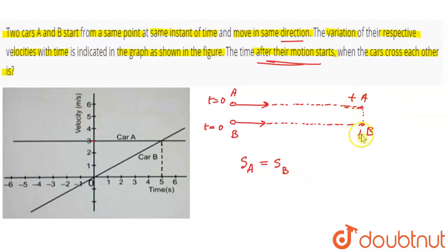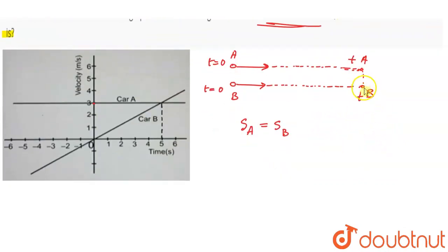At time instant T, where both cross, they started at the same time instant. Now, for the displacement of car A, since car A is in uniform motion, s_A equals v_A times t.